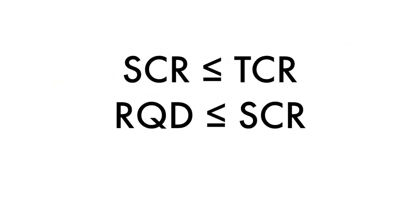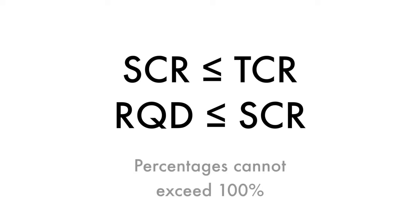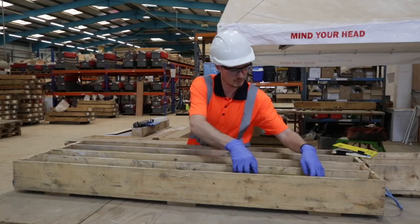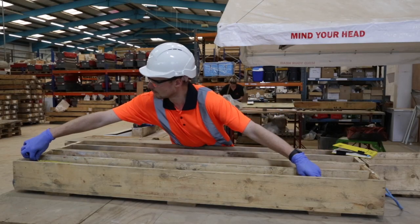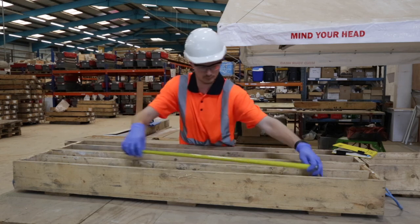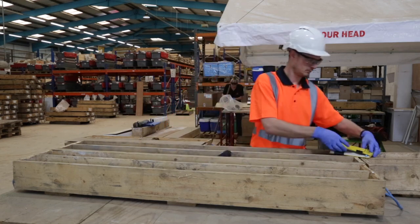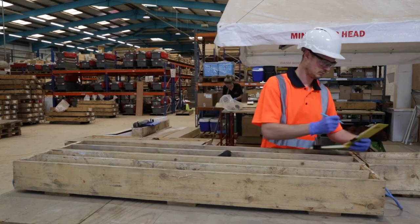By definition, SCR must be less than or equal to TCR, and RQD must be less than or equal to SCR. Percentages cannot exceed 100%. If you find that you have measured a TCR of greater than 100%, then core gain or stress relief has occurred, and you must make a correction accordingly.